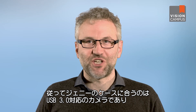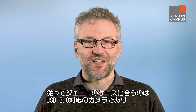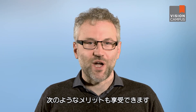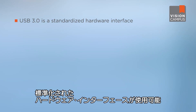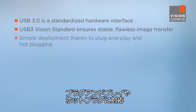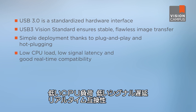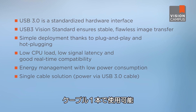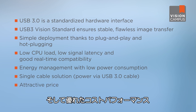So for Jenny's application, a camera with a USB 3 interface is appropriate, as it fulfills these requirements and offers the following additional benefits. With USB 3 she can use a standardized hardware interface. The USB 3 Vision standard ensures stable, flawless image transfer. It offers simple deployment thanks to plug-and-play and hot-plugging functions. It has low CPU load, low signal latency, and good real-time compatibility. It offers energy management with low power consumption, results in a single cable solution, and has a very attractive price.